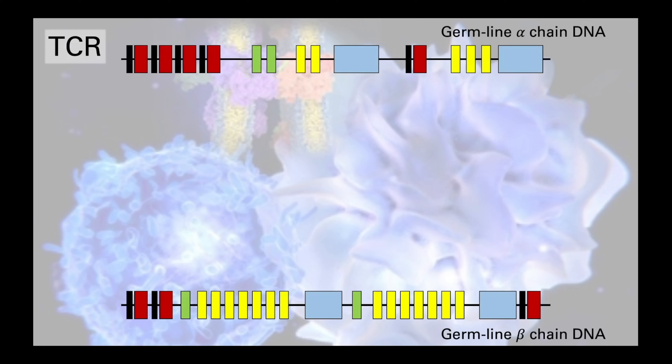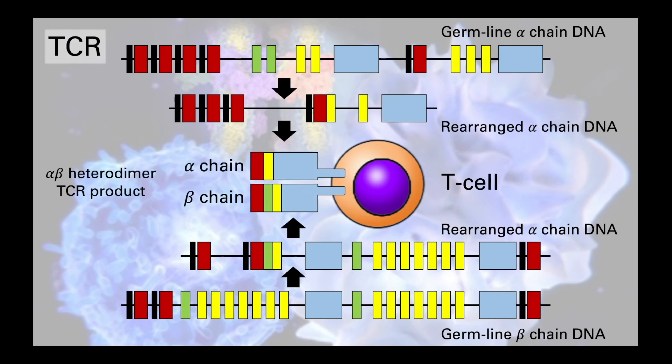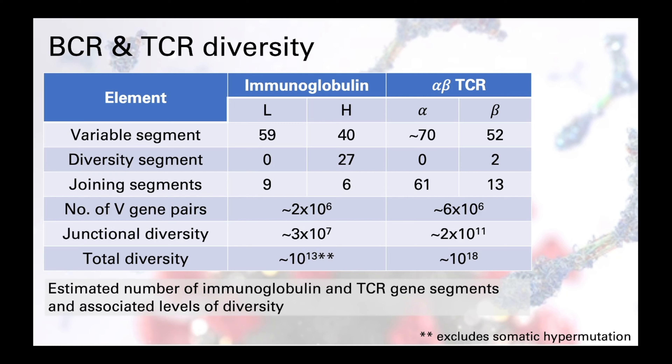Something similar is happening in the T cell receptors — again clusters of gene segments are randomly brought together to form a functioning TCR. Here we can see the germline DNA for the alpha chain at the top and the beta chain at the bottom. Through the same steps we see the splicing out of DNA between randomly selected V, D, and J segments, which are combined to form the alpha and beta chains on a CD4-positive T lymphocyte. This table provides some idea of how many different segments there are within each of these different families.